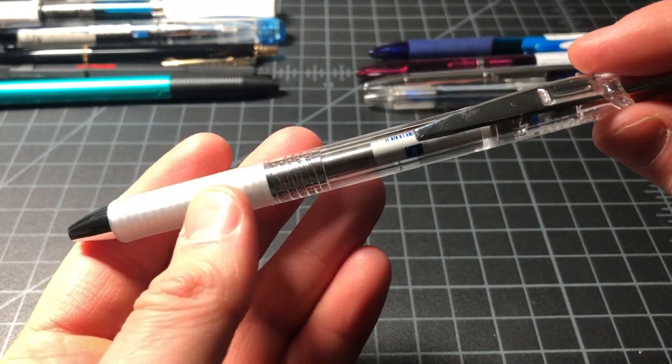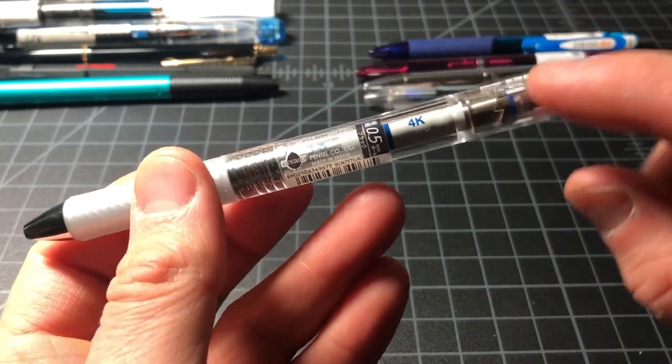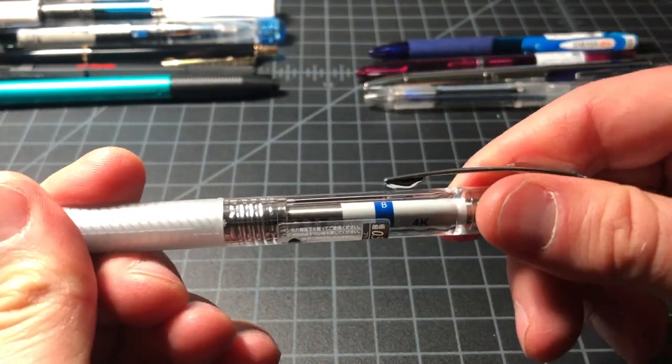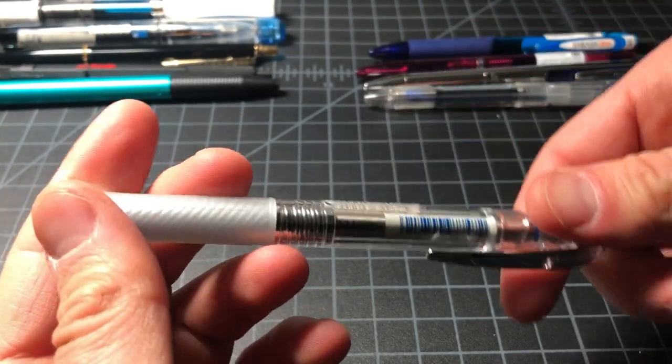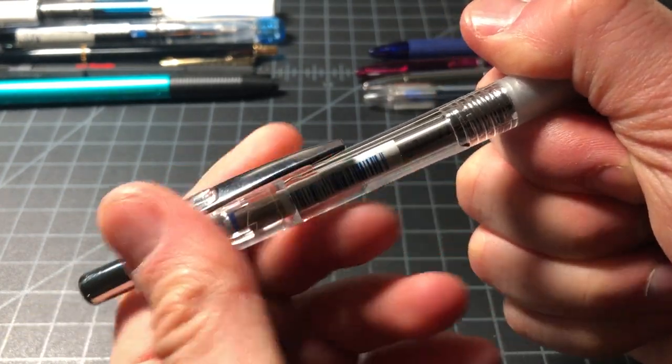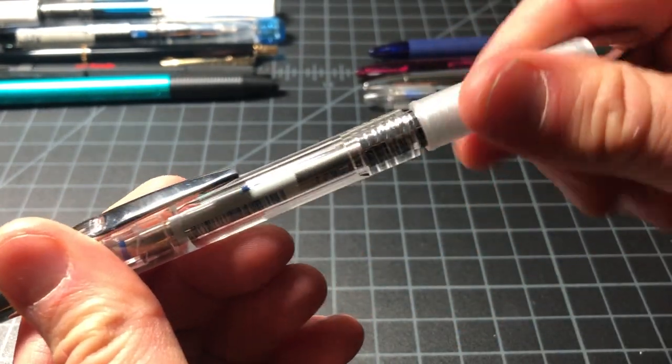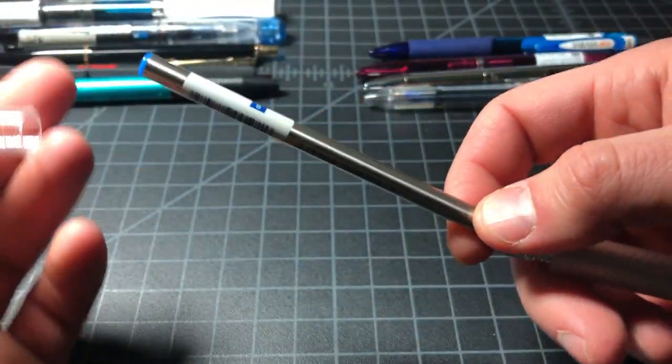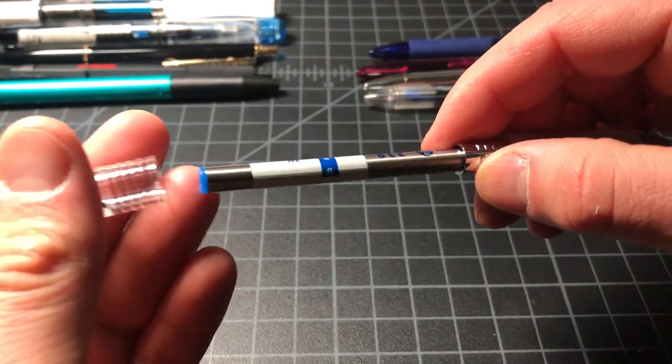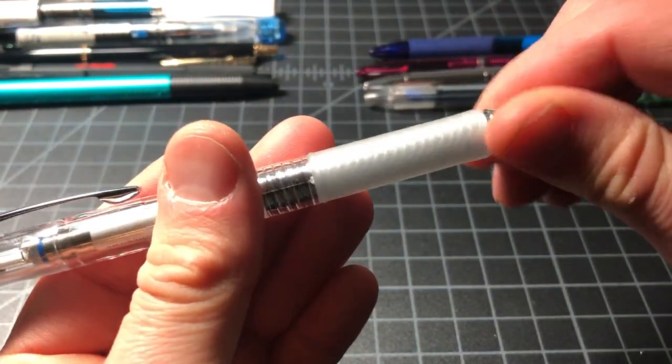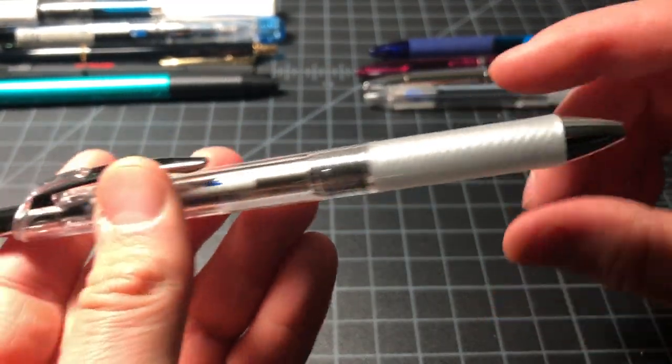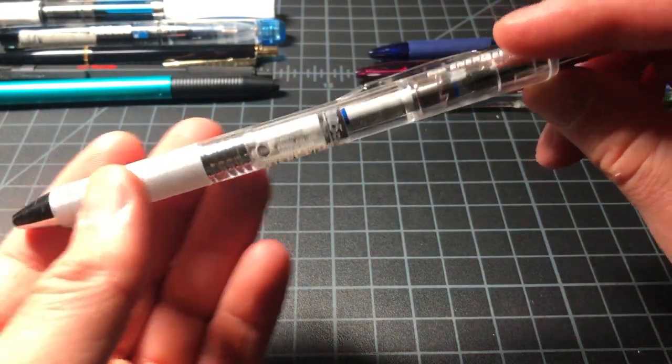Here we have my favorite combination of the year. This is the Pentel Energel in free, which is that clear body limited edition Pentel. Then inside of it I have a Pelican, I believe it's a 337. I just want to get that right. Sorry, 338, the Pelican 338 refill. This is a really nice rollerball refill.